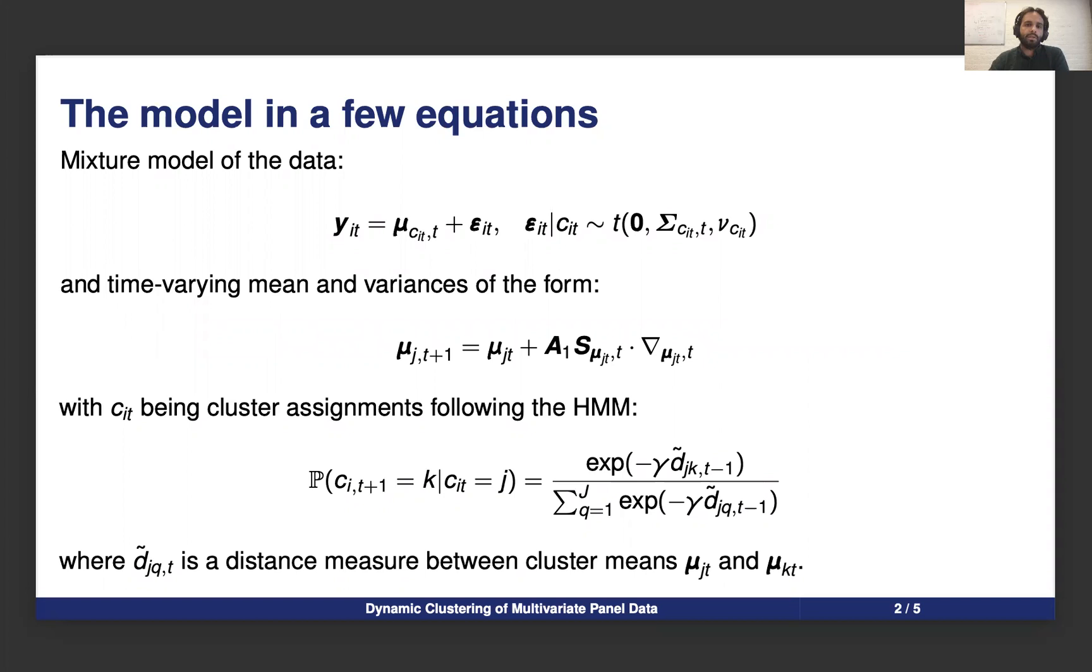Our mixture model consists of a cluster-specific time-varying mean plus a noise that follows a multivariate distribution. That is a mean vector for unit i that depends on which cluster unit i belongs to at time t. The distribution of the noise has a specific covariance and degrees of freedom.